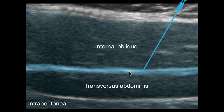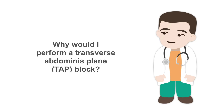I recommend doing this block in-plane, following your needle throughout its entire course. First, I always feel better when I can see the needle in view for the entirety of the procedure. Second, the peritoneum is very close by — you need to make sure you do not go deep enough to touch the peritoneum, or pierce through it into the critical structures we discussed.